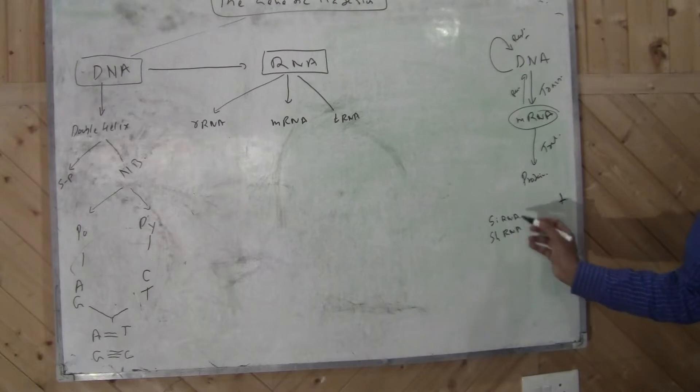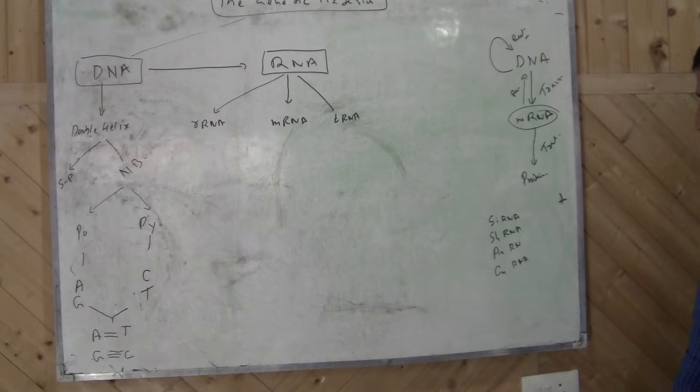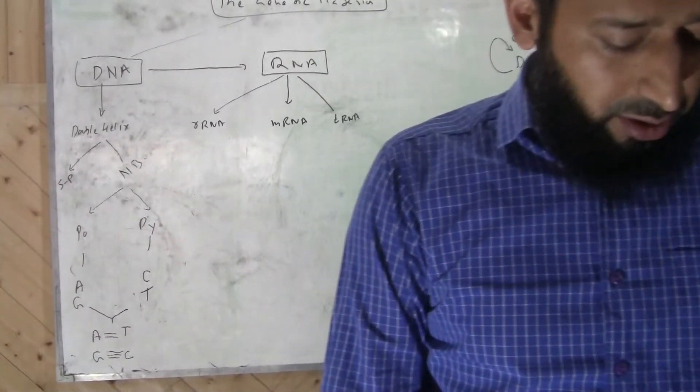These are used to silence genes or knockdown genes, and knockdowns we studied in the previous lecture. Then you have antisense RNA, cytoplasmic nuclear RNA, miRNA, microRNA, that have a regulatory role and so on and so forth.